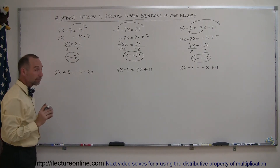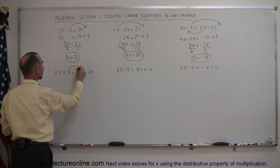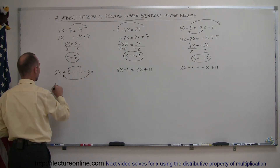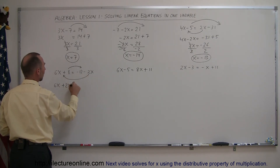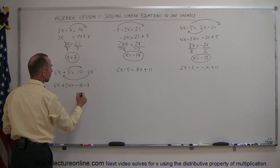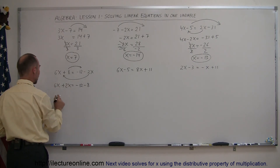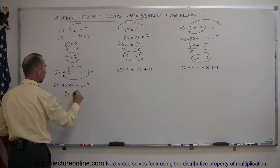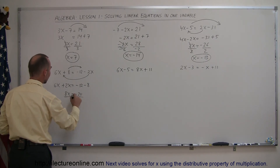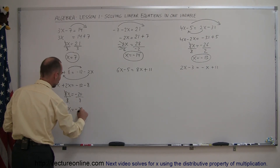Next example: the object is to move all X's to the left side and all numbers to the right. So the 8 goes to the right and the minus 2X goes to the left, becoming 6X plus 2X. When we cross the equal sign, the sign changes, so this equals minus 12 minus 8, because the plus 8 becomes a minus 8. Combining like terms: 6X plus 2X is 8X, and minus 12 minus 8 is minus 20. Dividing both sides by 8, we get X equals minus 2.5.